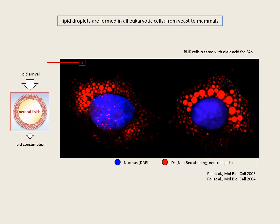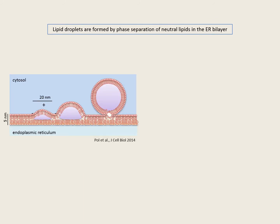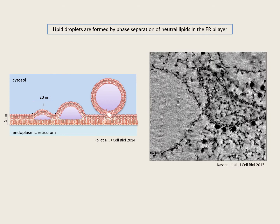Lipid droplets, here in red, are formed in all eukaryotic cells from yeast to mammals, and they have this appearance by electron microscopy: spherical organelles surrounded by a single monolayer of phospholipids, full of neutral lipids inside and normally in contact with other organelles such as mitochondria. The prevalent model suggests that lipid droplets are formed at the cytoplasmic face of the endoplasmic reticulum, where the progressive accumulation of neutral lipids between the two leaflets increases membrane curvature, and the nascent lipid droplet is converted into a globular and then a mature lipid droplet.